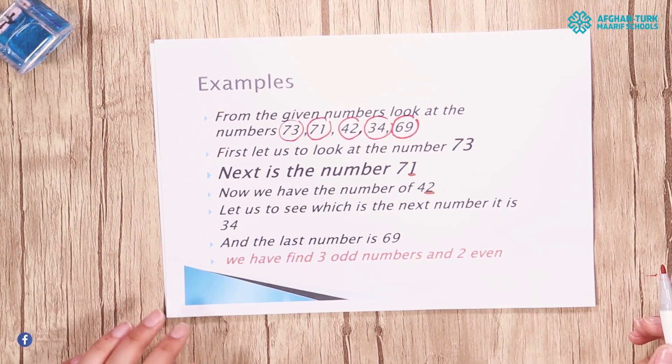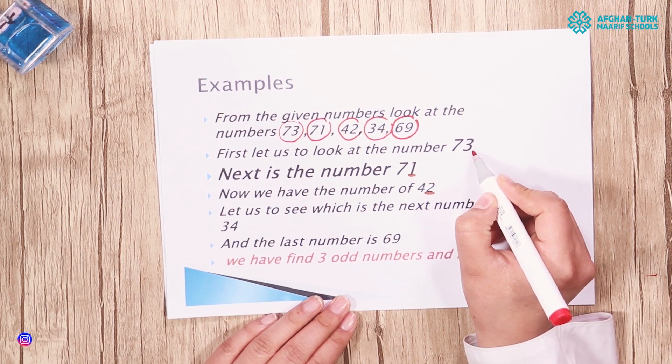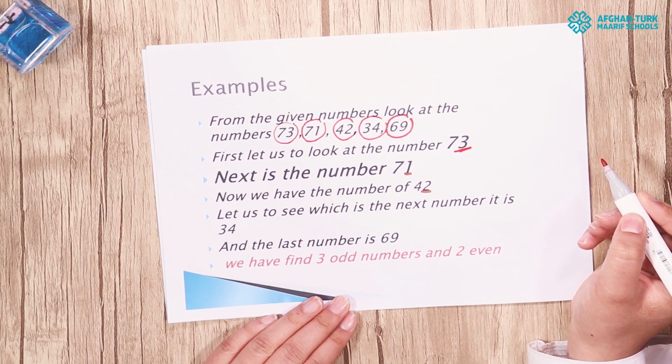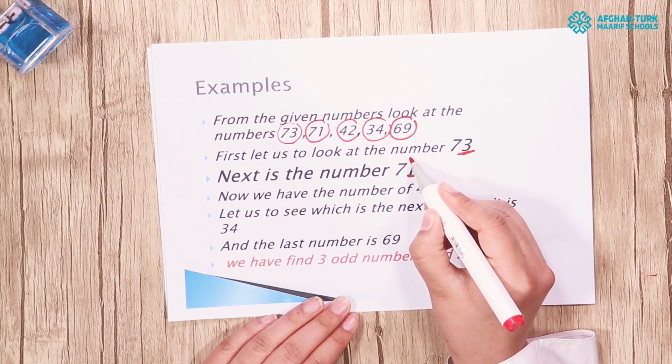First let us look at the number 73. Next is the number 71. So we can say that the number 73 is an odd number.